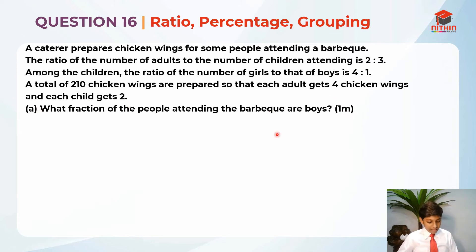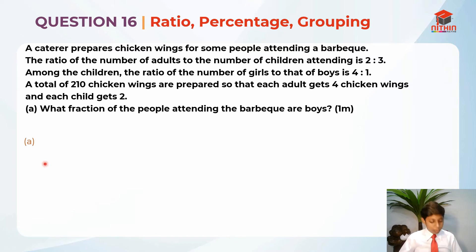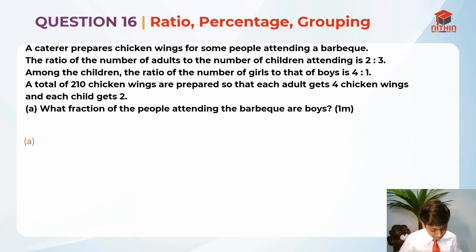So this is part A. After this, there's a part B in this question — I'll go through that later. So first, we need to list down the ratio. Before that, we should highlight.